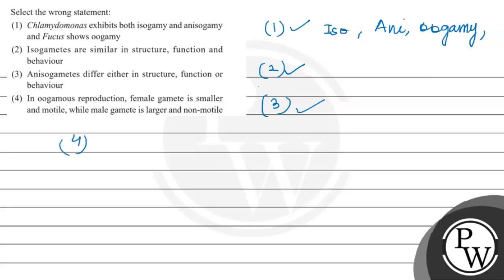In the fourth option, in oogamous reproduction, the female gametes are small. But this is incorrect. The male gametes are small and motile. These characteristics are swapped. Where it says female gametes, it should say male, and vice versa. Since this is incorrect, this is the right answer. Option 4.